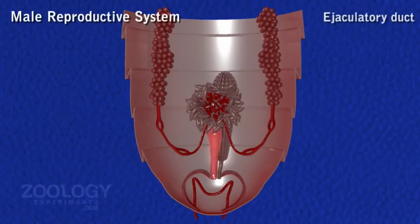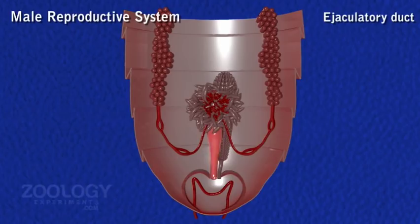Ejaculatory Duct. It is a single median muscular duct that extends posteriorly and opens into the genital pouch through the male genital pore, which lies immediately below the anus and between the ninth and tenth sternum.